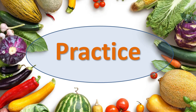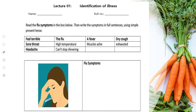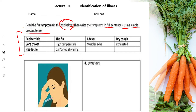Now is the time for practice. You can download this worksheet from the description box below this video, or you can get it in print form from your teacher. What you need to do is read the flu symptoms listed in the box, then write the symptoms in full sentences using simple present tense. The symptoms listed include: feel terrible, sore throat, headache, the flu, high temperature, cannot stop shivering, a fever, muscle ache, dry cough, and exhausted.